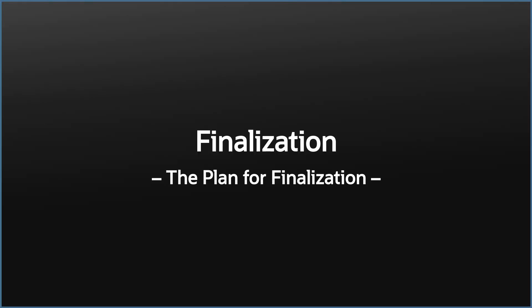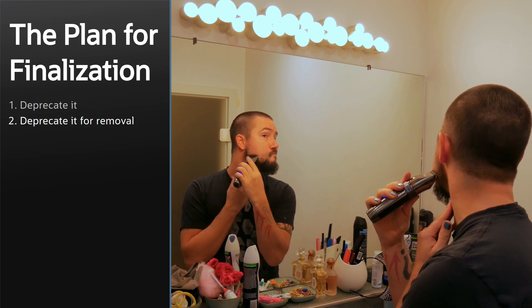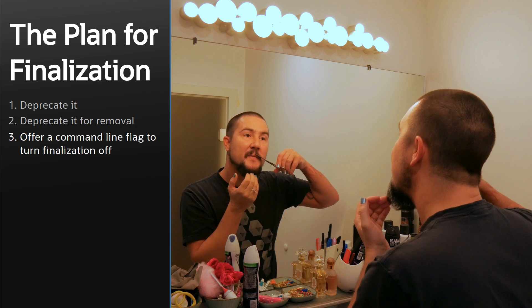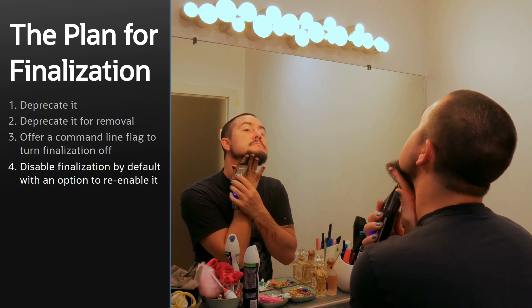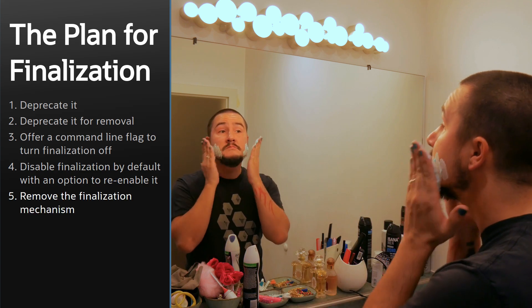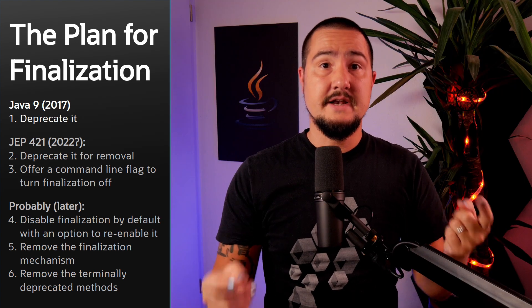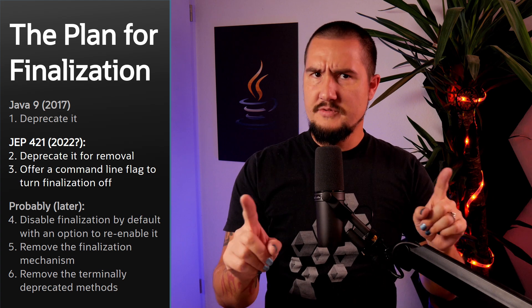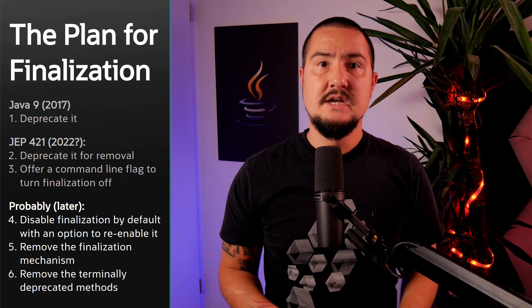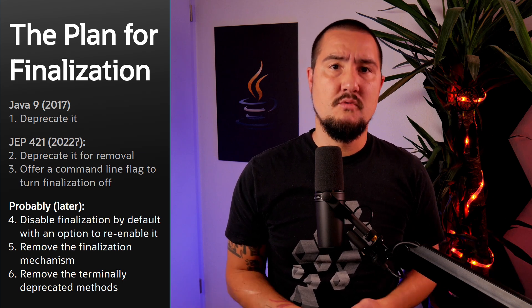With all of that said, what's next? I think it's time to shave off this old beard. Step 1: Deprecate it. Step 2: Deprecate it for removal. Step 3: Offer a command line flag to turn finalization off. Step 4: Disable finalization by default with an option to re-enable it. Step 5: Remove the finalization mechanism. Step 6: Remove the terminally deprecated methods. Step 1 happened in Java 9. Steps 2 and 3 are proposed by JEP 421 and will probably happen in Java 18 or 19. Steps 4, 5 and 6 are still on the drawing board. The journey from finalization's initial deprecation in 2017 to its eventual removal will probably take about a decade — more than enough time for the ecosystem to wean off its alluring promises and replace it with better alternatives.